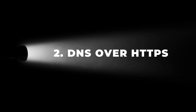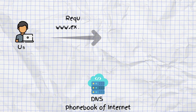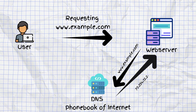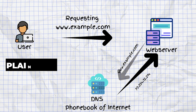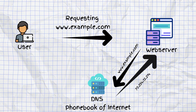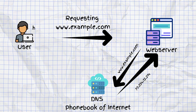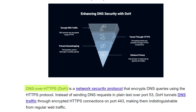Point number two is DNS over HTTPS. DNS is like the internet's phone book — when you type a website's name, your device asks a DNS server for the IP address. Normally, these DNS requests are sent in plain text, so your ISP and anyone on the same network can see every website you ask for, even if the site itself uses HTTPS. By switching to DNS over HTTPS, you encrypt these queries.